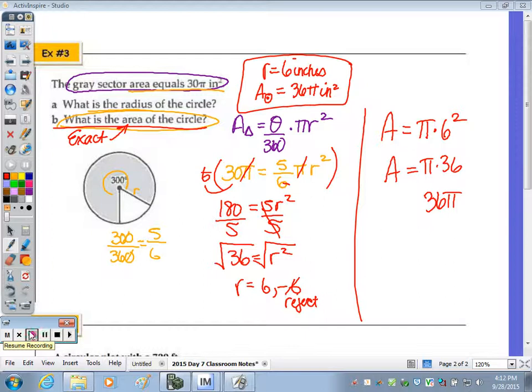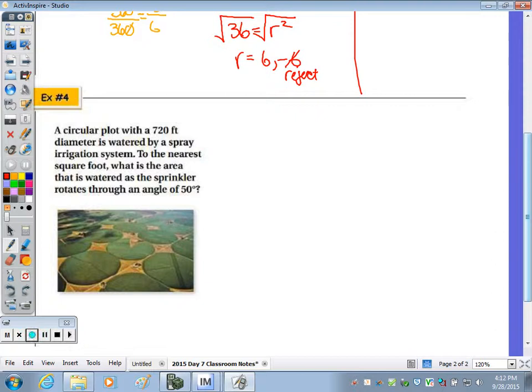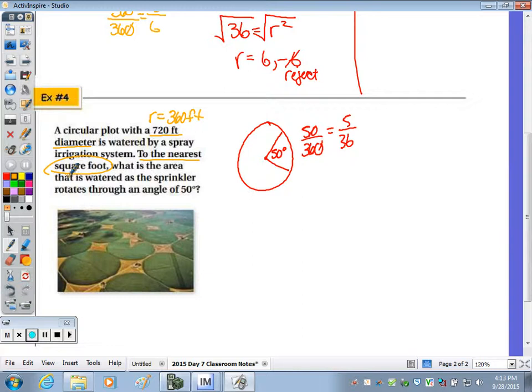Alright, at number 4, it says, a circular plot with a 720 foot diameter is watered by a spray irrigation system. To the nearest square foot, what is the area that is watered as the sprinkler rotates through an angle of 50 degrees? So we're looking, we have an angle of rotation, 50 degrees. That is 5 out of 36, 5/36 of the total circle. It told us that we have a 720 foot diameter. So that means our radius is 360 feet. I need to find the nearest square foot. What is the area that is watered by the sprinkler? So it's going to rotate from here to here. So what is the area that it's going to cover?